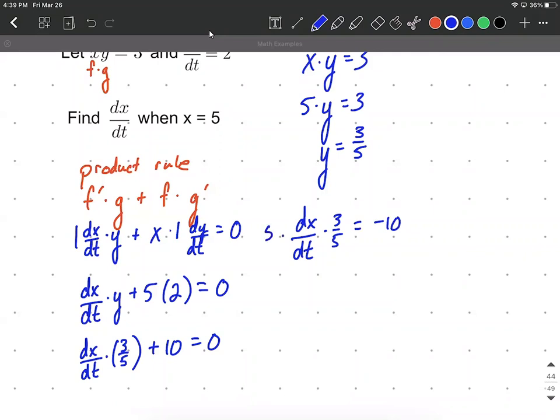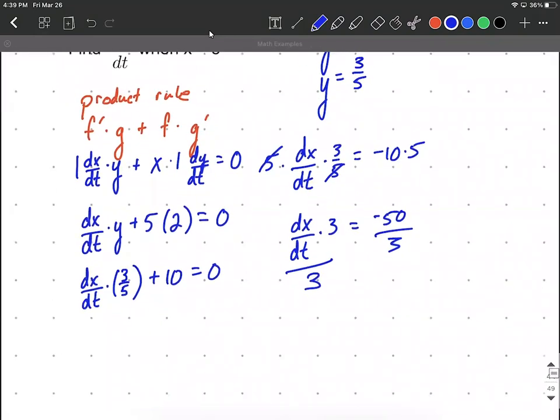Next, I'm going to multiply both sides by 5. Multiplying will counteract this dividing by 5, thus getting rid of our fraction. So dx/dt times 3 equals negative 50, and then dividing both sides by 3, we'll get dx/dt on one side by itself. And there we have dx/dt.